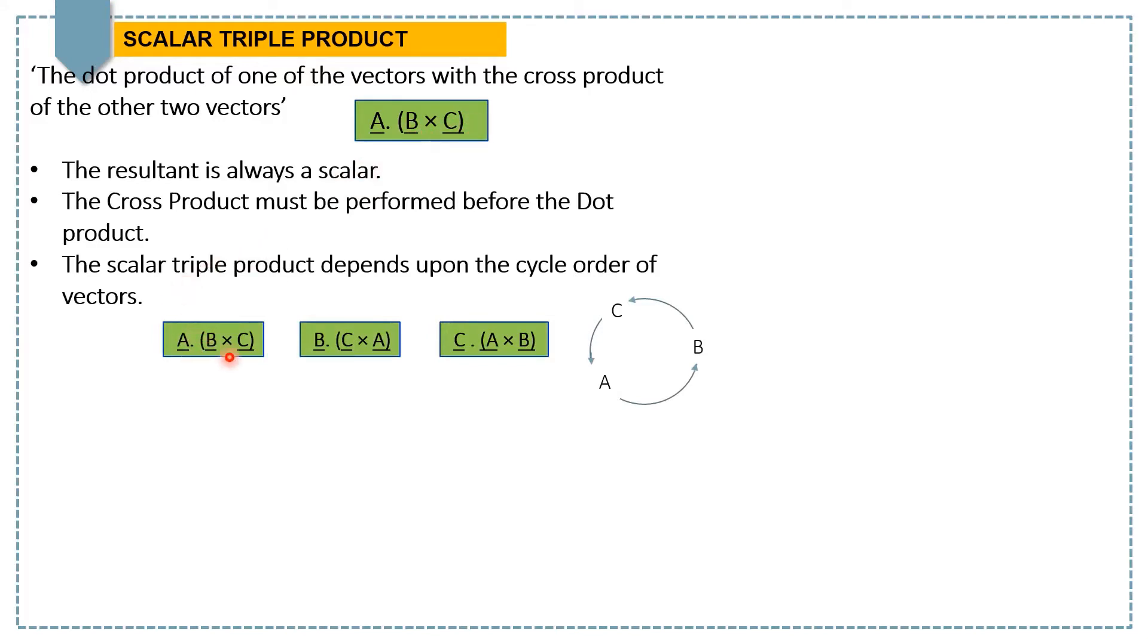The value of the product depends upon the cycle order of the vectors. The value changes if the order is non-cyclic. So here you can see we have A dot B cross C, and in the second case by keeping the cycle order, B dot C cross A, and in the third case, C dot A cross B.